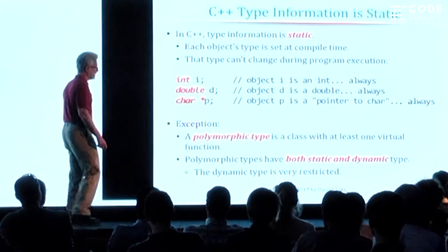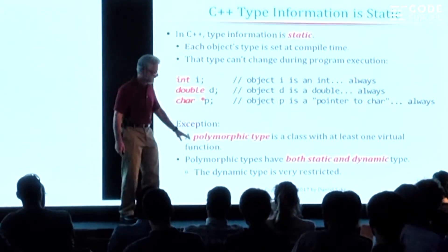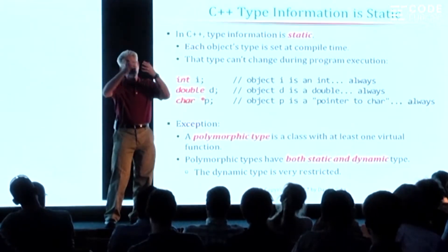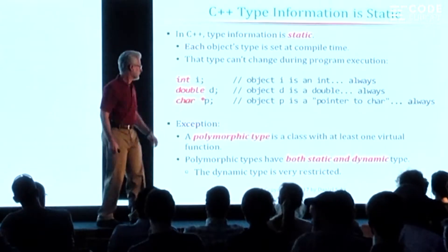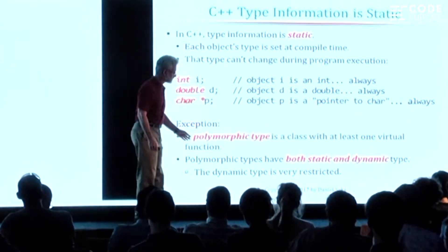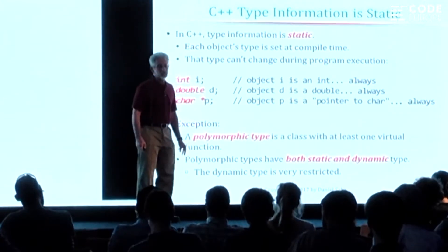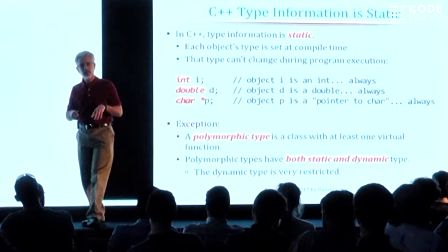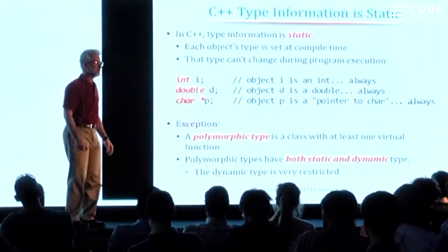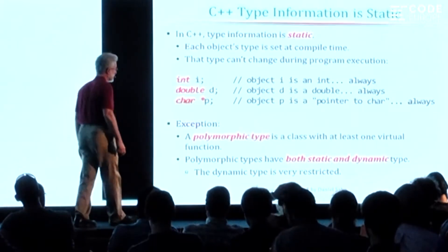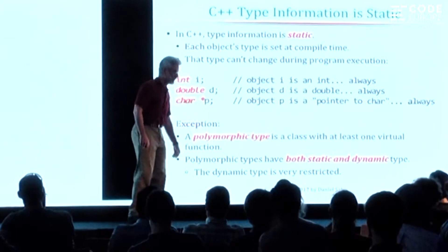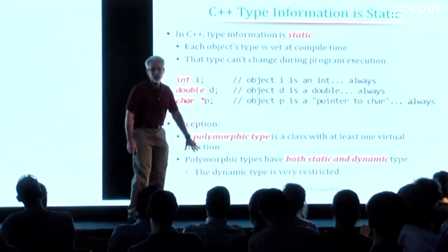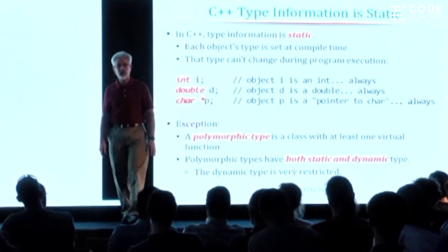The exception to this — just truth in advertising — is that C++ does have the ability to have type hierarchies based on derived types with virtual functions, and those types actually have both static and dynamic type. But even there, the dynamic type information is very restricted. The set of different types you can assign to a polymorphic type is very limited. So for the purposes of today's discussion, that's a corner case we're not going to talk about today.